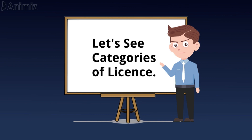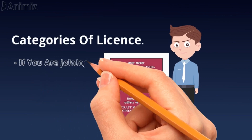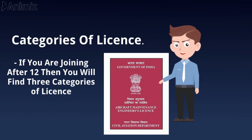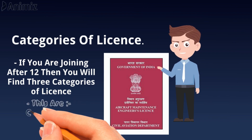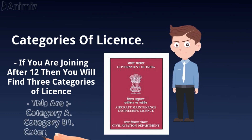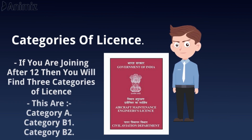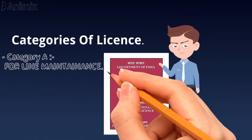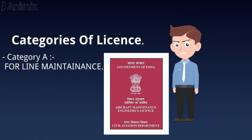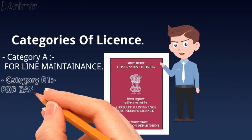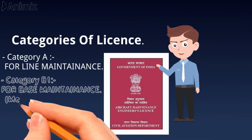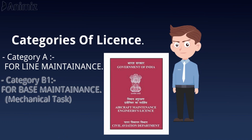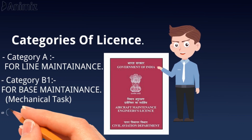If you are joining after 12th, you will find three categories of license: A, B1, and B2. Category A is a license for line maintenance, which includes minor maintenance tasks. B1 is a category license for base maintenance, which includes high-level maintenance of the mechanical parts of an aircraft.